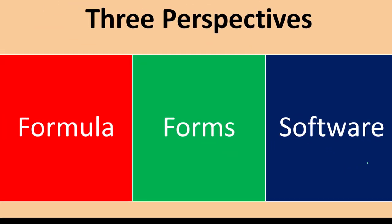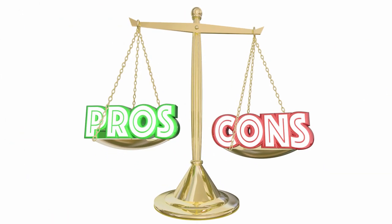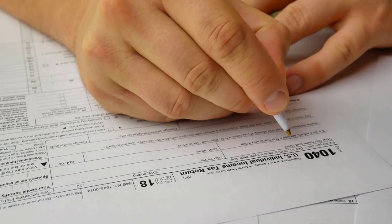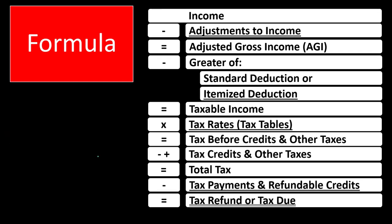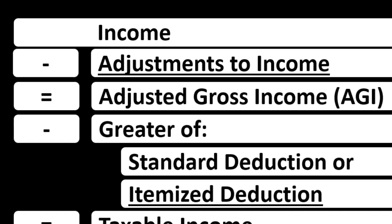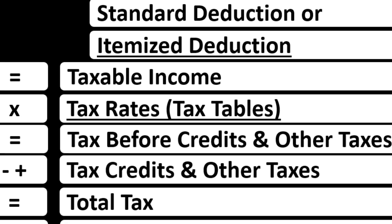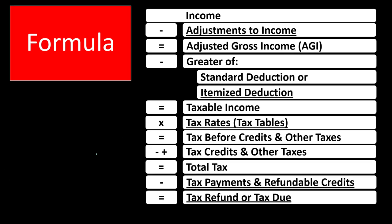Each of these methods of looking at tax law has its pros and cons for particular situations. Seeing tax law from three different angles helps us understand it more easily, as well as the practical application of preparing actual tax returns. First, we have the income tax formula — taking the tax law and breaking it down into a formula that we can visualize in our mind. This is useful because it provides a broader perspective, and when you're thinking about changes to the tax code, you can start to visualize the tax formula and understand the impact on the tax return.